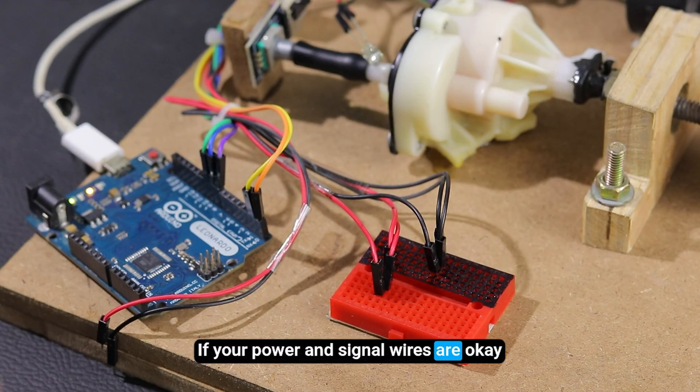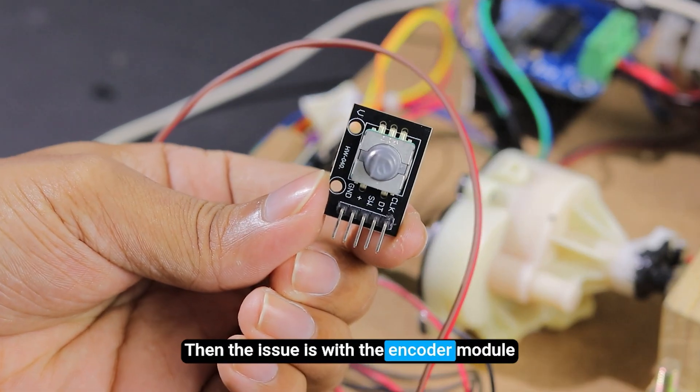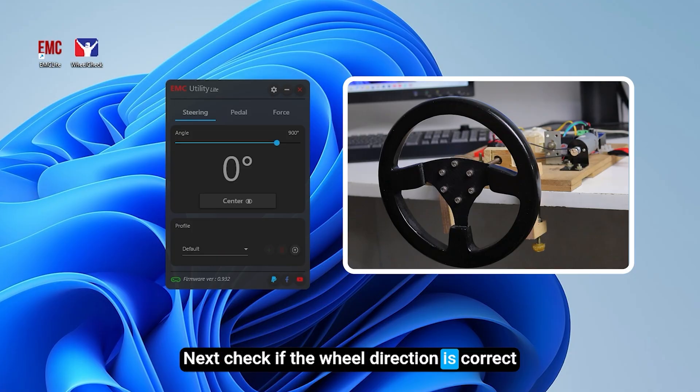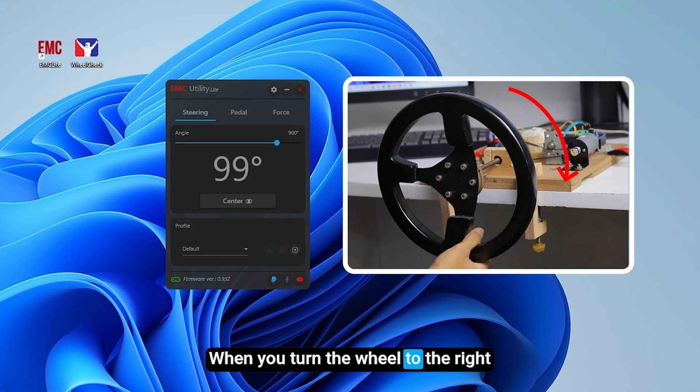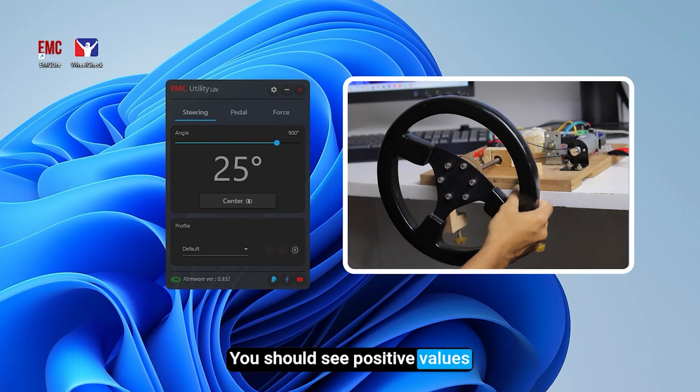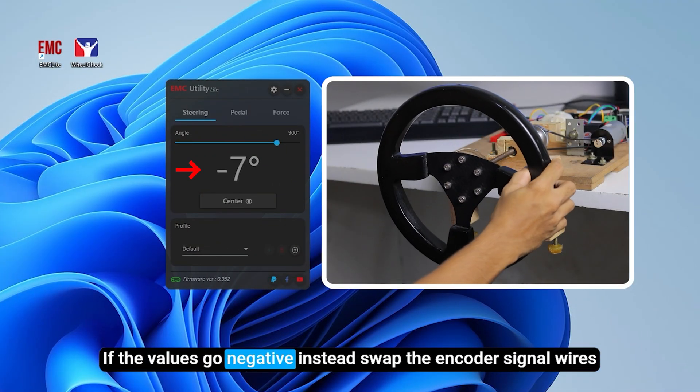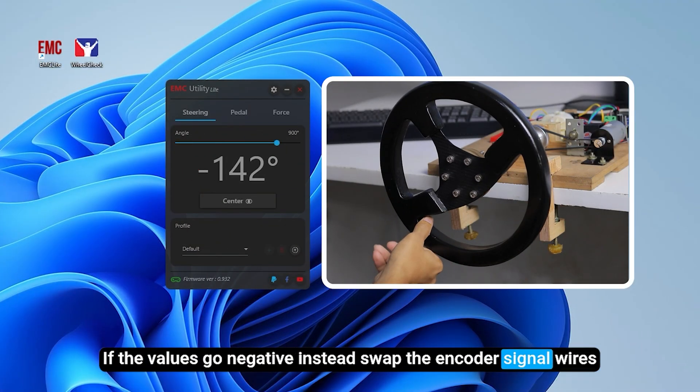If your power and signal wires are okay, then the issue is with the encoder module. Next, check if the wheel direction is correct. When you turn the wheel to the right, you should see positive values. If the values go negative instead, swap the encoder signal wires.